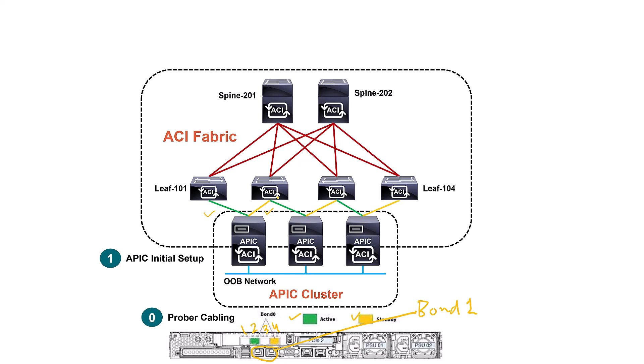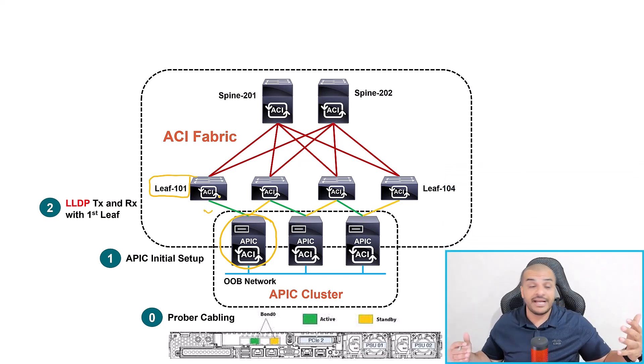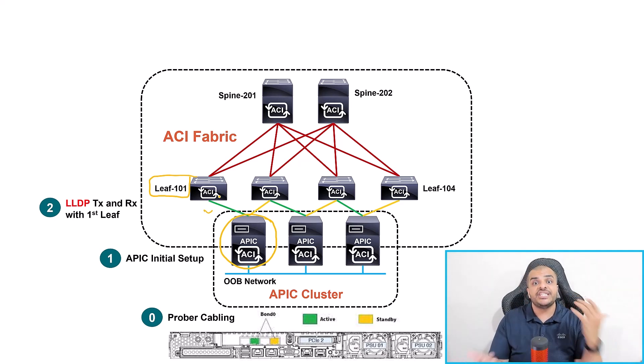Step two: the first APIC — the master APIC — starts sending and receiving LLDP messages to the very first leaf, for example leaf number 101. That first leaf is whichever switch is powered on first and connected to the APIC — it's not based on numbers. The APIC and the leaf both send and receive LLDP messages to get to know each other.